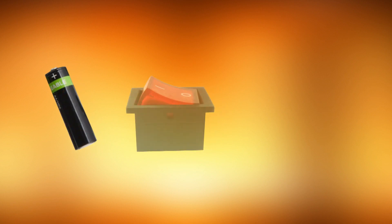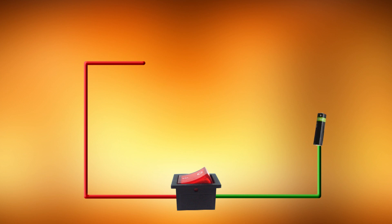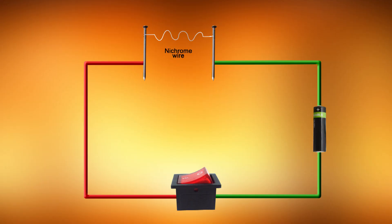Now let us come to the heating effect of electric current. We will do some activities in which an electric current produces heat. For activity number one, the materials required are a cell, a switch, connecting wires, two nails, and about 10 to 15 centimeter long piece of nichrome wire. I have already placed the cell, wire, and switch. Now I am connecting the nails to both ends of wires — one positive terminal and one negative terminal — then connecting the nichrome wire to both nails.